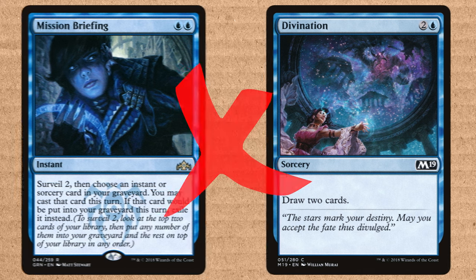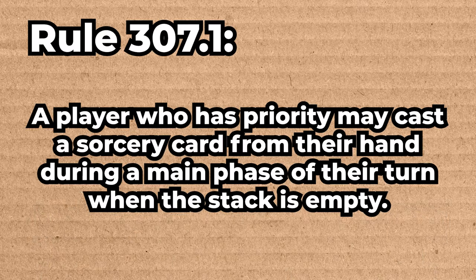The only permission we have is Rule 307.1: a player who has priority may cast a sorcery card from their hand during the main phase of their turn when the stack is empty.